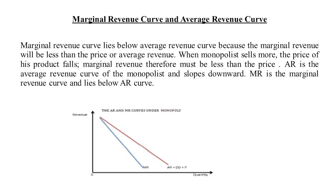Now, let's look at the marginal revenue curve and average revenue curve under monopoly. The marginal revenue curve lies below the average revenue curve because marginal revenue will be less than the price or average revenue. When the monopolist sells more, the price falls, so marginal revenue must be less than the price. The average revenue curve of the monopolist slopes downward, and the MR curve lies below the AR curve.